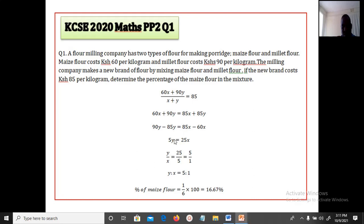And when we solve this we will get 5y is equal to 25x. Now divide both sides by x and both sides by 5 and we land up with y over x equals 25 over 5 which is equal to 5 over 1. This means that the mixture is in the ratio of y to x is 5 to 1. If they are asking for the percentage of maize flour in the mixture, we just add the total ratio and take the ratio that represents maize flour, which is 1 over the total which is 6 times 100, you get 16.67%.